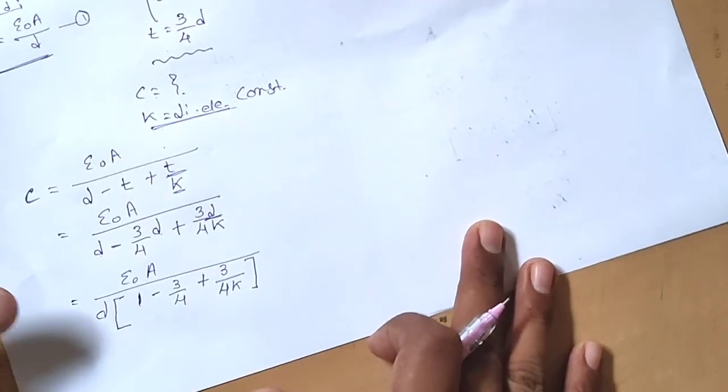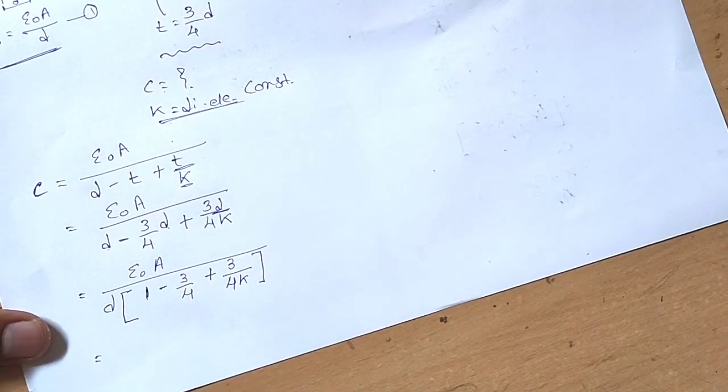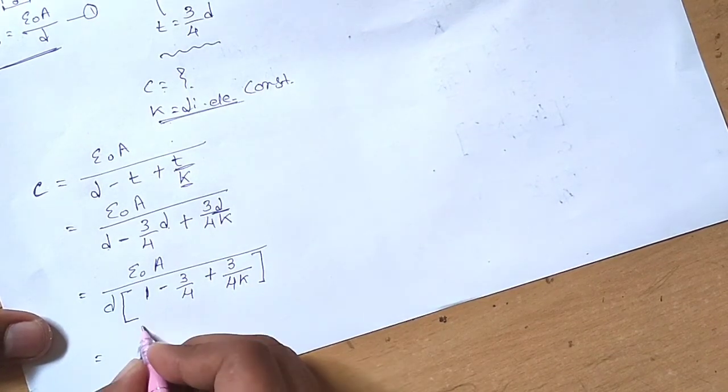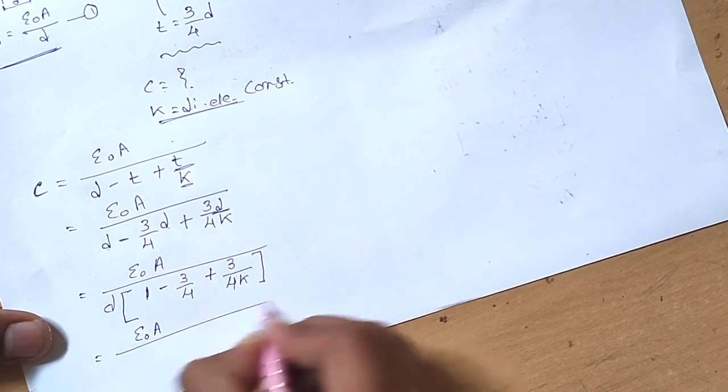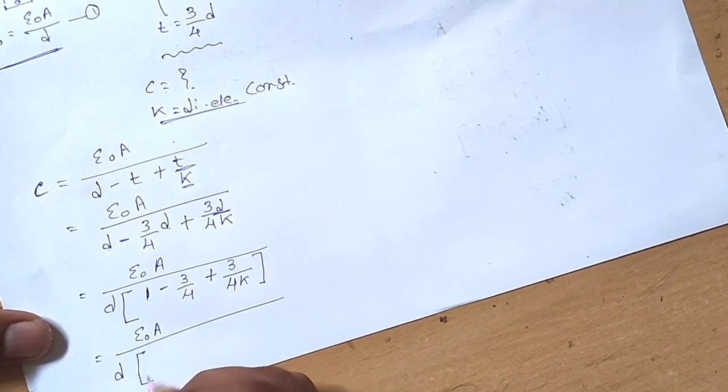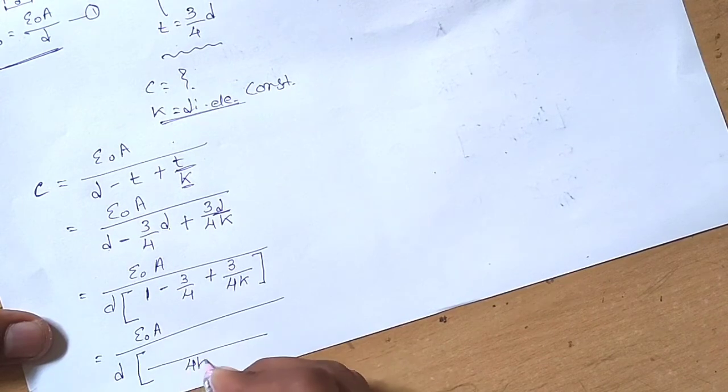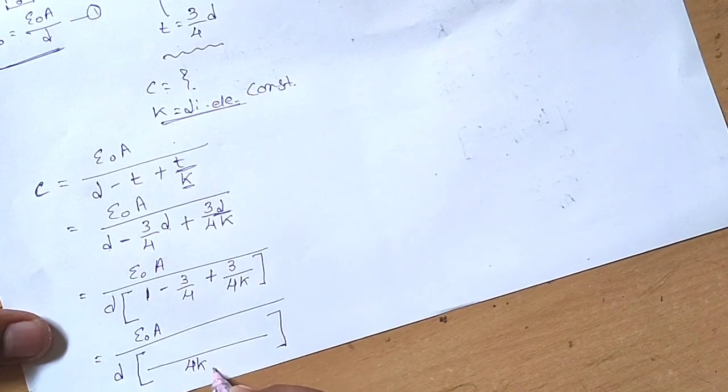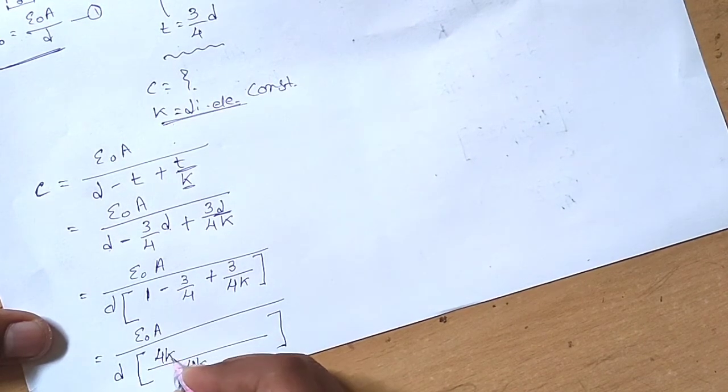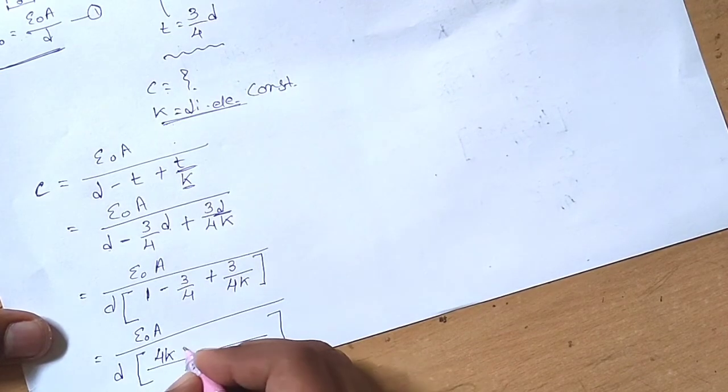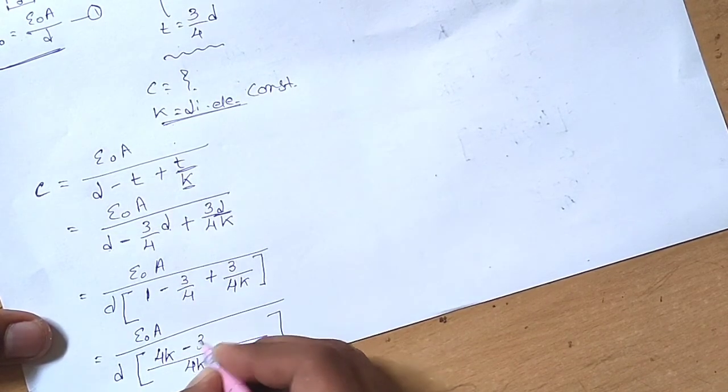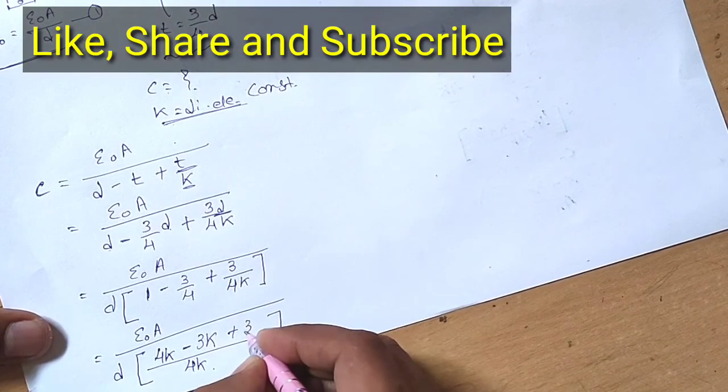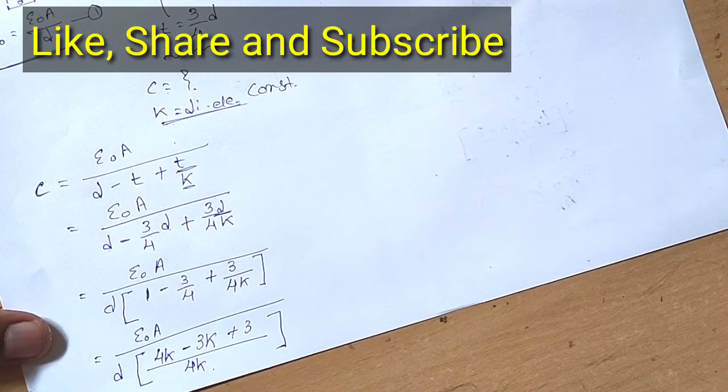In the denominator, the LCM is 4k. So C = ε₀A / [d × (4k - 3k + 3)/(4k)]. One multiplied by 4k gives 4k, minus 3k, plus 3 as it is.